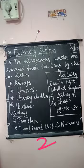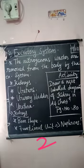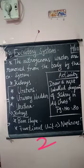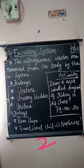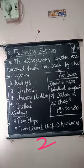The functional unit of the kidneys is called the nephron. Just as the functional unit of the nervous system is the neuron — the nervous system is a connection of lots of neurons — likewise, the functional unit of the kidney is the nephron. In kidneys, there are millions of nephrons.